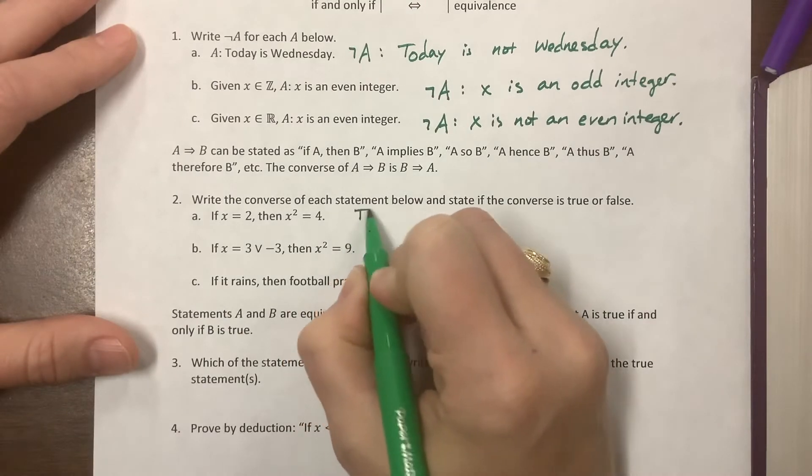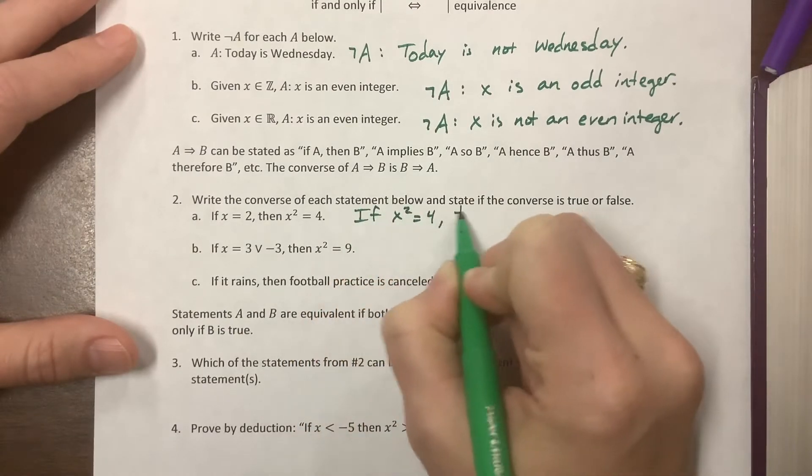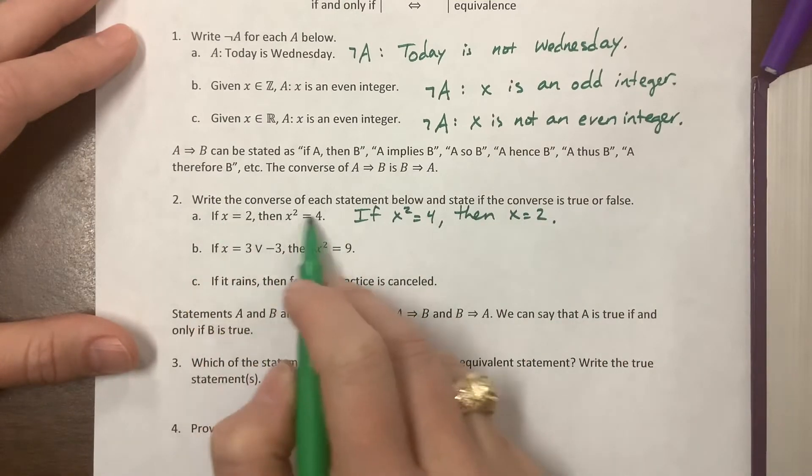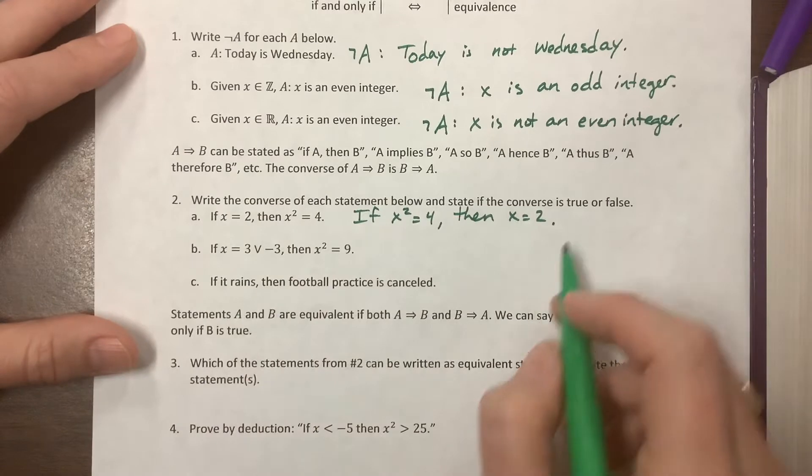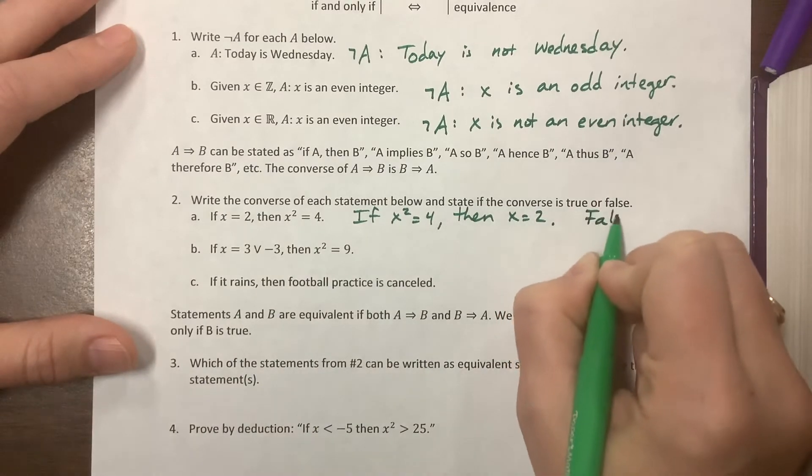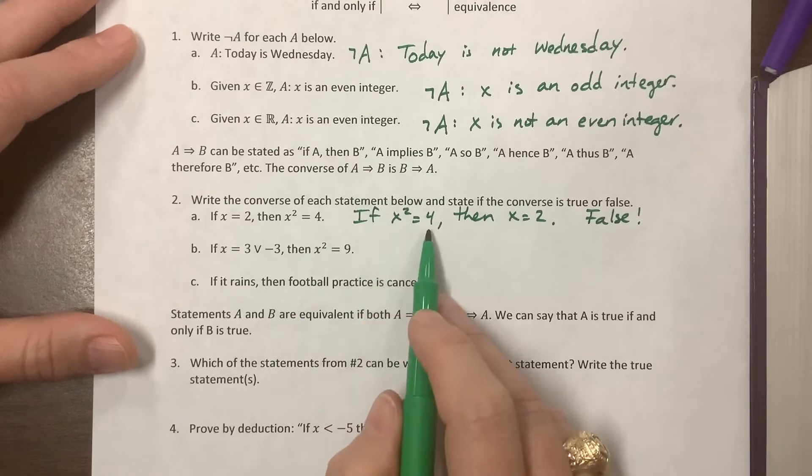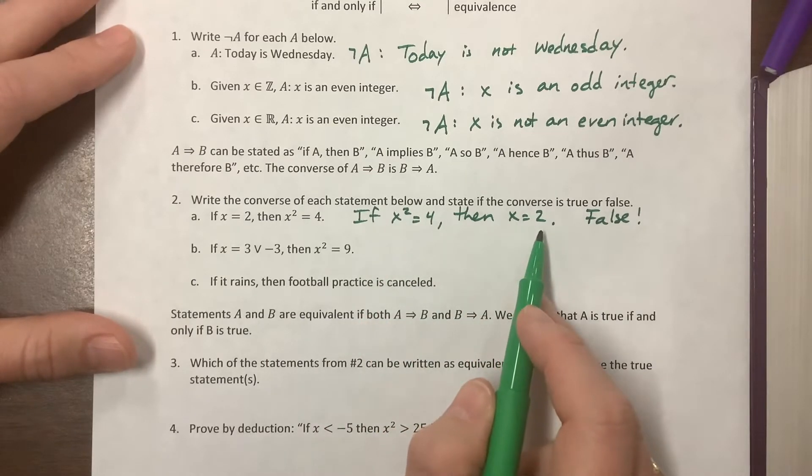For this one, the converse becomes: if x² = 4, then x = 2. We've switched - if this part were A and this part were B, now we've put B first then A. This would be false, because if x² = 4, then x could equal -2.